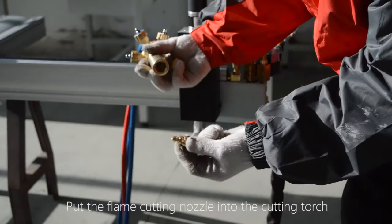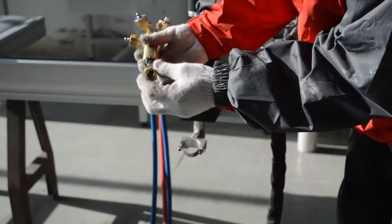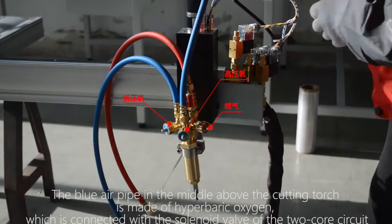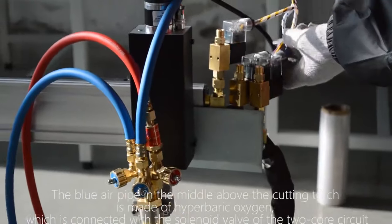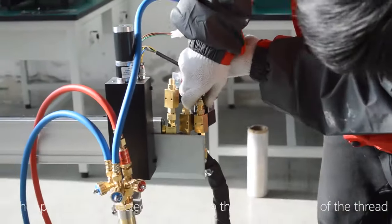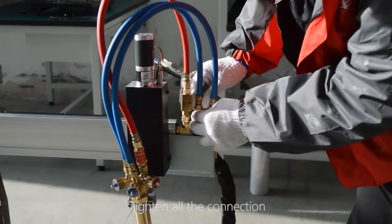Put the flame cutting nozzle into the cutting torch. The blue air pipe in the middle above the cutting torch is made of hyperbaric oxygen which is connected with the solenoid valve of the two core circuit. Other pipes are connected according to the front and back of the thread. Tighten all the connections.